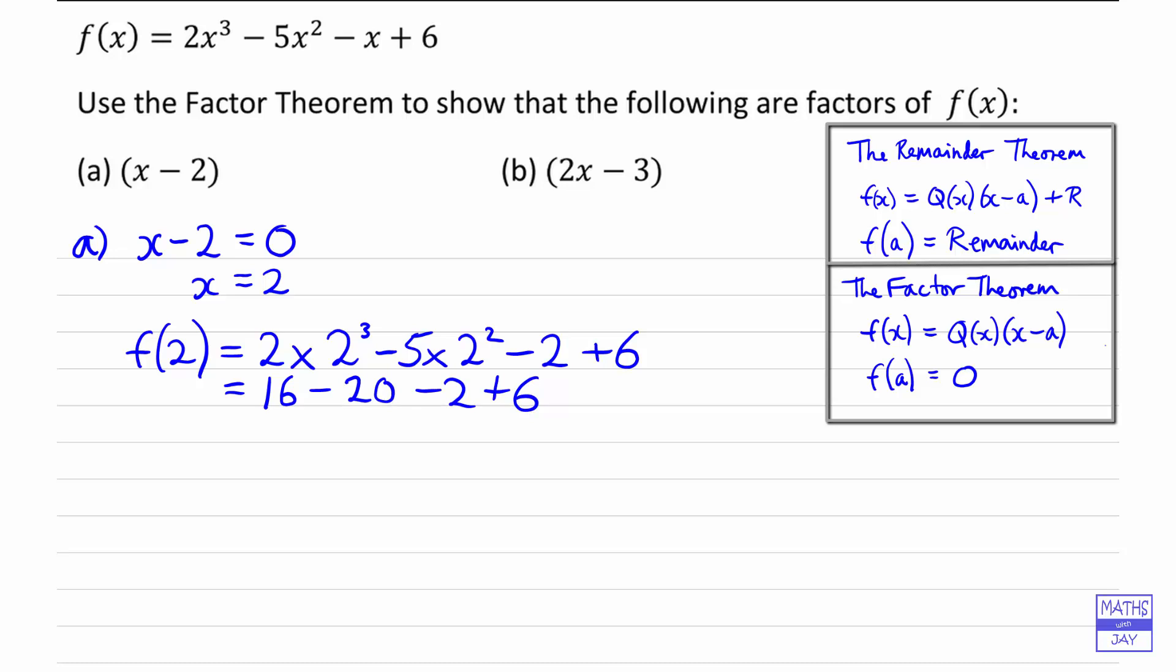So we've got 16 plus 6, that's 22, take away 22 is zero. So if f(2) is equal to zero, then we know that x minus 2 is a factor of f(x).